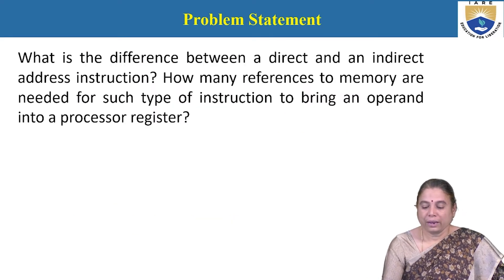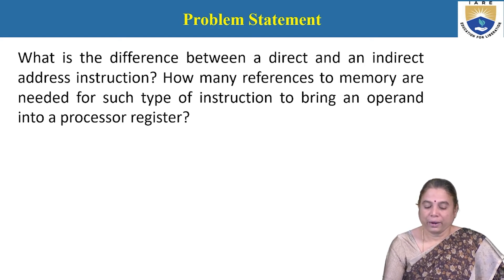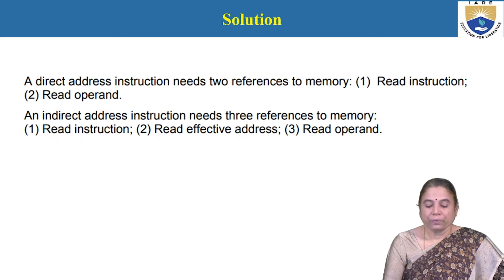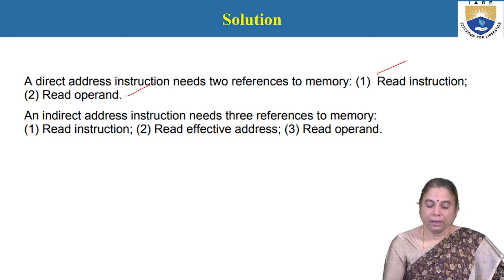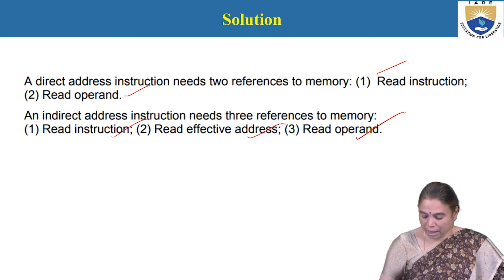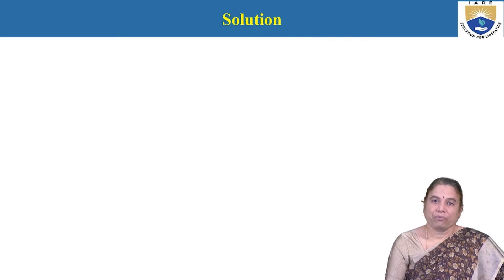What is the difference between direct and indirect address instructions? How many references to memory are needed for each type to bring an operand into a processor register? There are two types of addressing modes. A direct address instruction needs 2 references to memory: one to read the instruction and one to read the operand. An indirect address instruction needs 3 references: read instruction, read effective address, and read the operand.